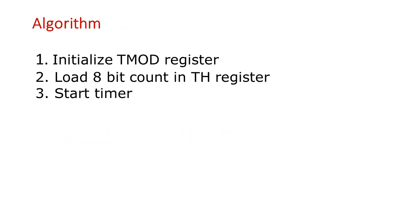The algorithm to generate a delay in Mode 2 is simple: initialize the TMOD register to select the timer and mode, load the 8-bit count according to the desired delay into the TH register, and start the timer. Everything else will be done automatically by the timer.